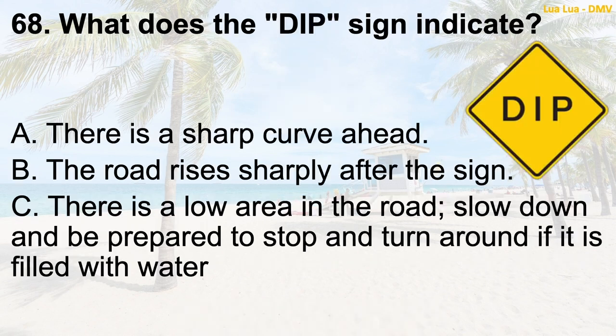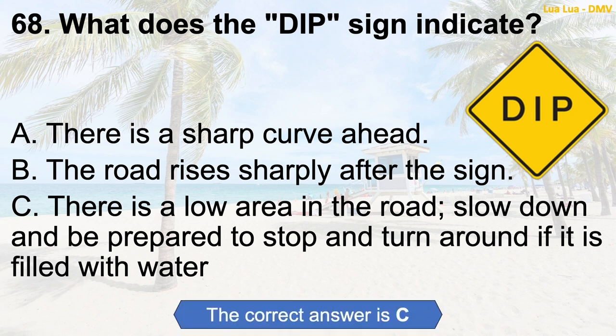Question 68: What does the DIP sign indicate? A. There is a sharp curve ahead. B. The road rises sharply after the sign. C. There is a low area in the road — slow down and be prepared to stop and turn around if it is filled with water. The correct answer is C: There is a low area in the road — slow down and be prepared to stop and turn around if it is filled with water.